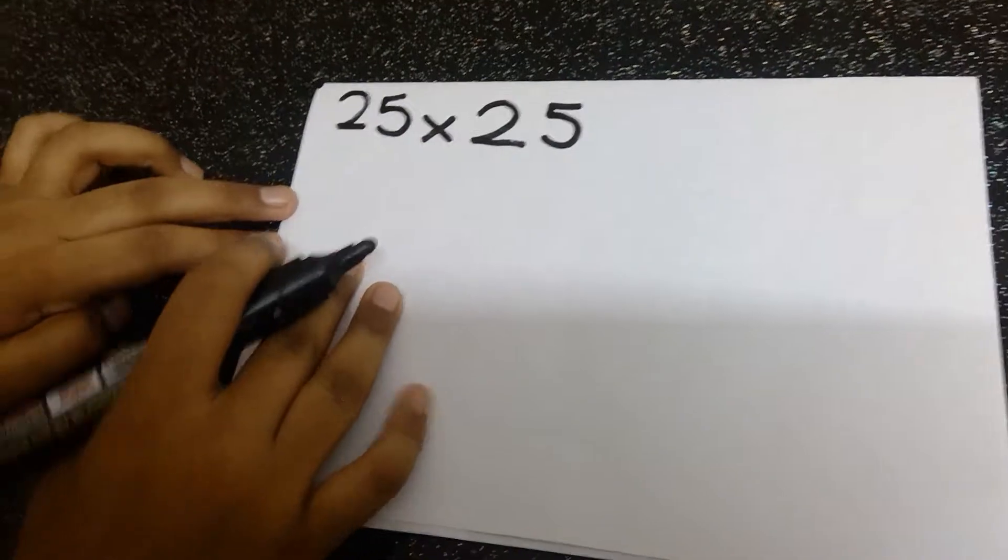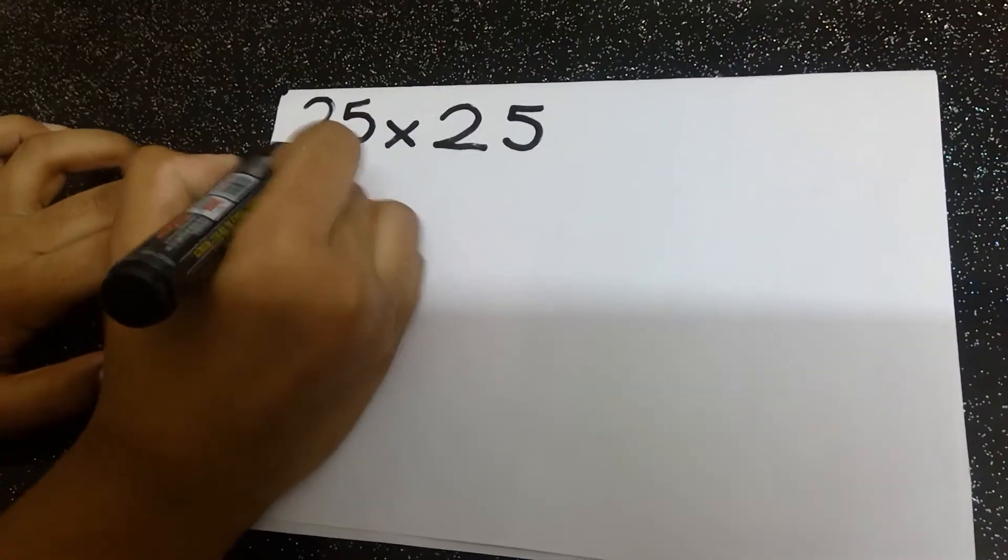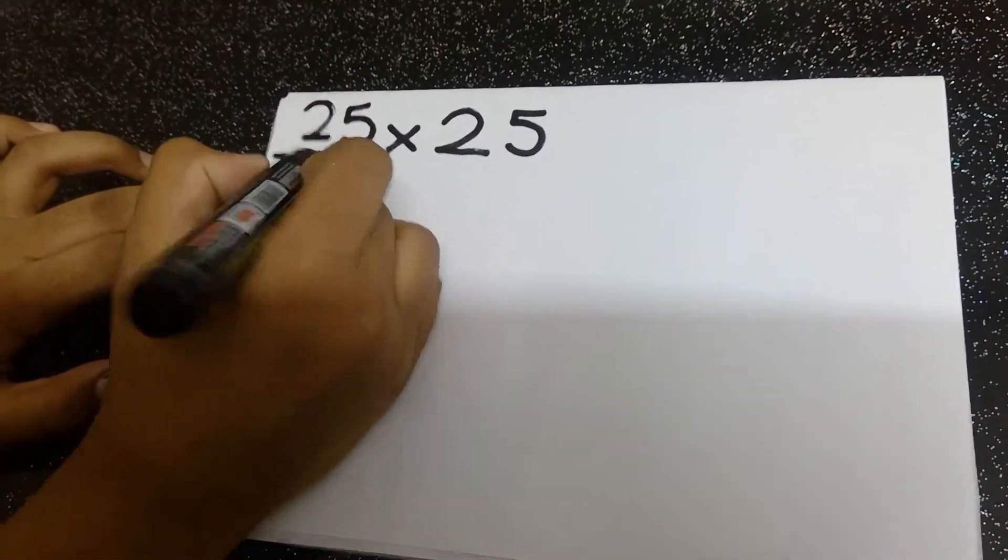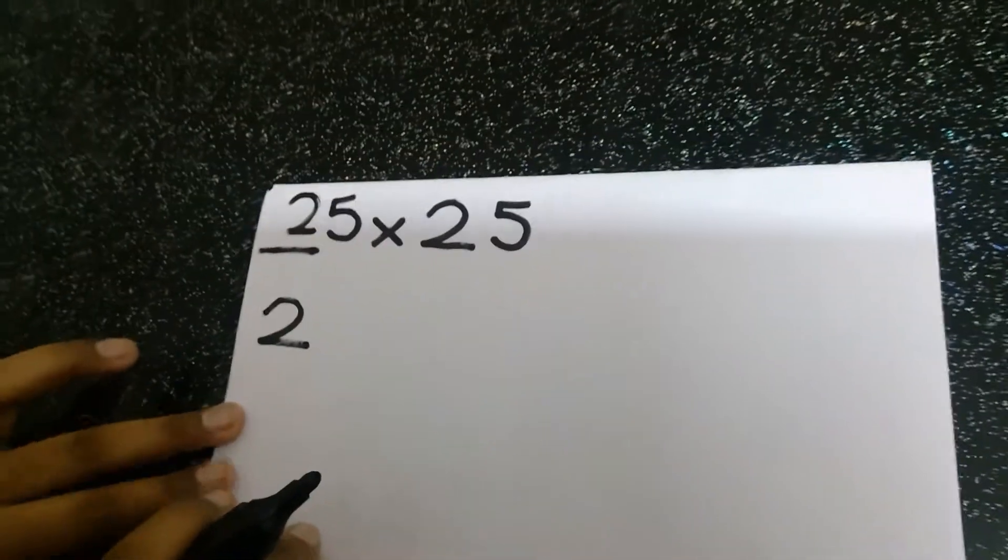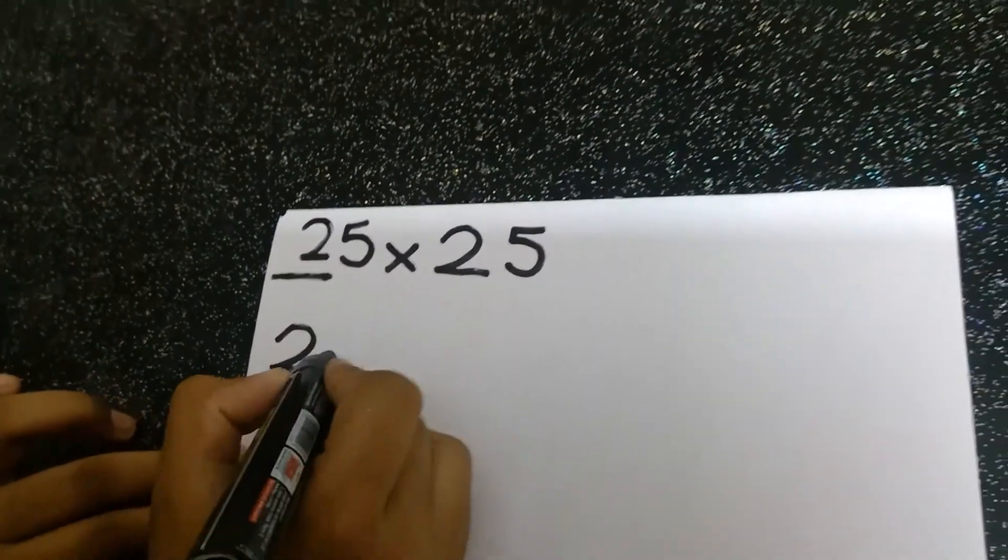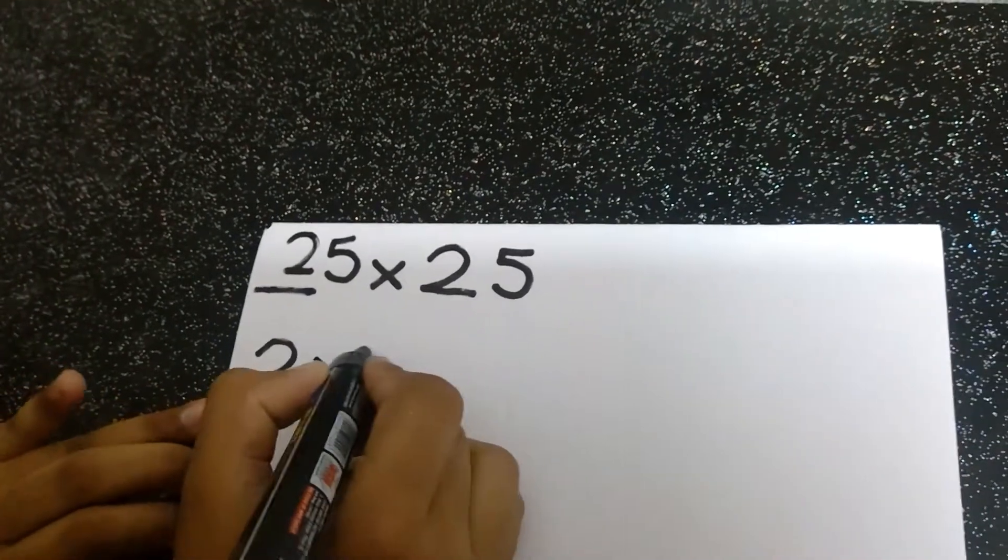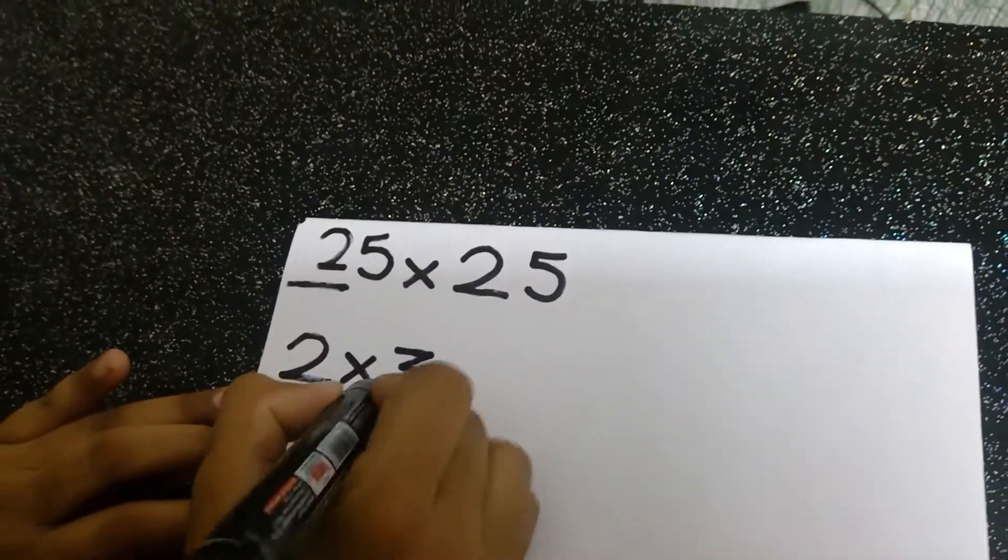So the first digit of the question is 2. Now we are going to multiply 2 with the next number 3. Our answer is 6.